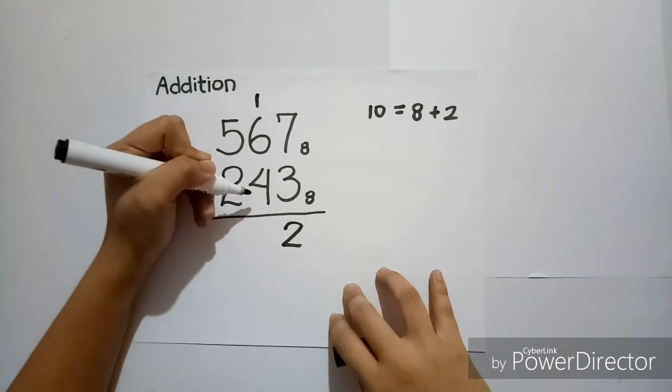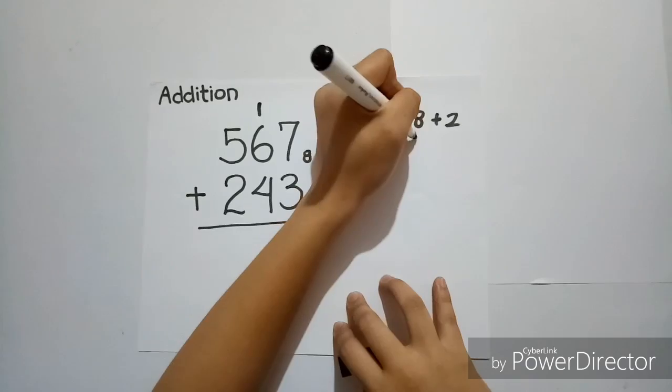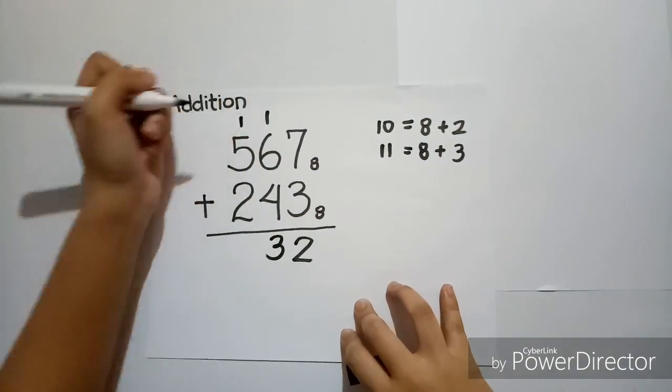Now, 6 plus 4 plus 1 is equal to 11, which is equal to 8 plus 3. So, we'll take 3 and carry 1.